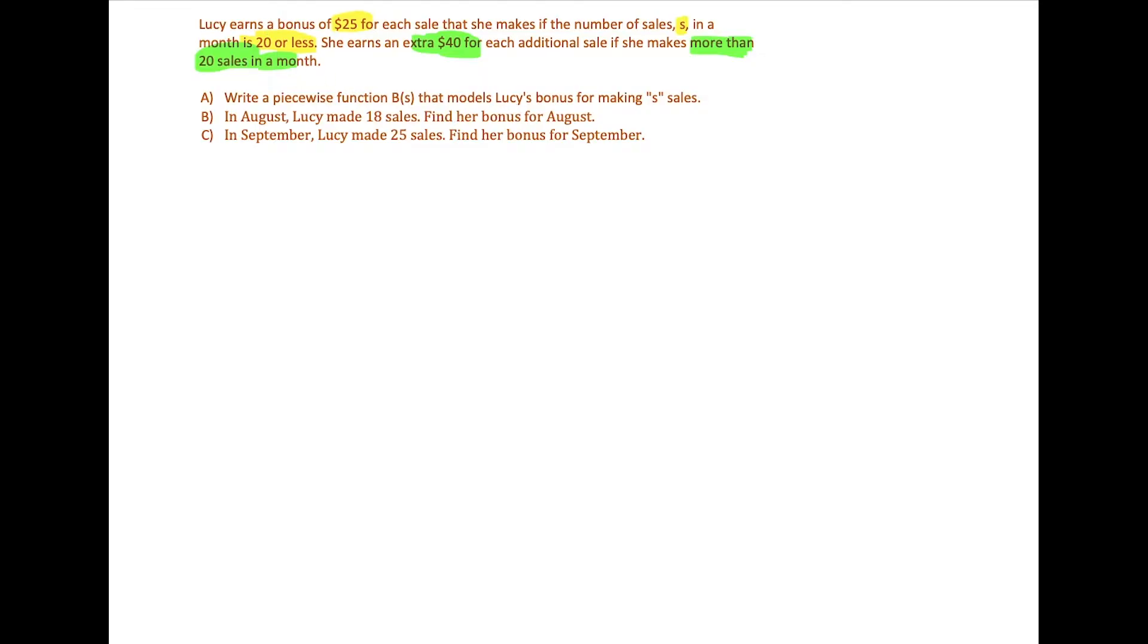So a few things that we have to be mindful of here. Well for one, that when Lucy makes less than or equal to 20 sales a month, she gets a $25 bonus for each sale. So that tells us that B, the amount of bonus that she gets, is equal to 25 times S. So really all we're doing is if she makes one sale, she gets $25. If she makes two sales, she would have 25 times S equals two, which would be a $50 bonus.